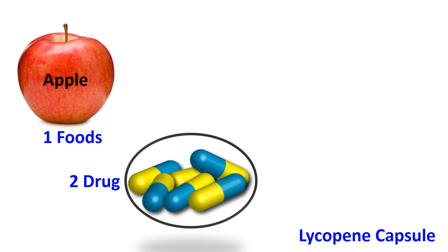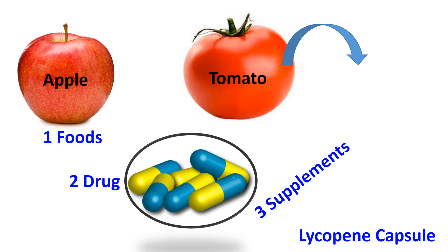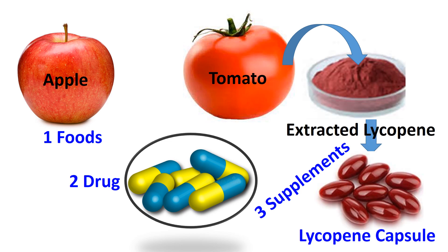There is another category — supplements — which are also consumed as a dose, mainly to prevent diseases or to support health and well-being. These are mainly extracts of foods, herbs, spices and biomaterials. For example, lycopene could be extracted from tomatoes and formulated as a capsule. Other examples are fish oil extracted from fish and allicin extracted from garlic.